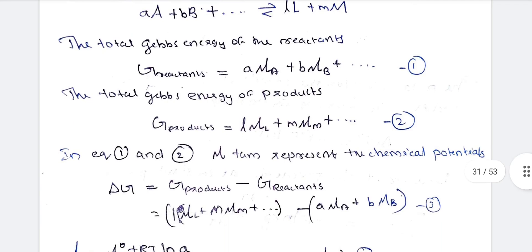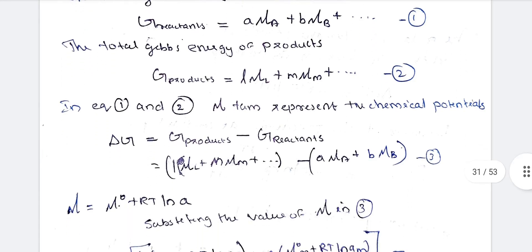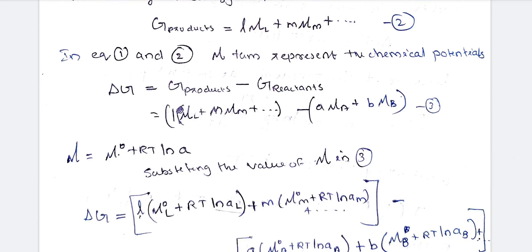In these equations we represent chemical potential terms. Delta G equals G(products) minus G(reactants), which equals L·μL + M·μM + etc., minus A·μA + B·μB. Now, the chemical potential is given by: μ = μ° + RT ln a.